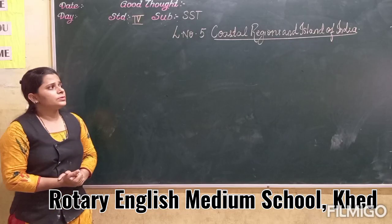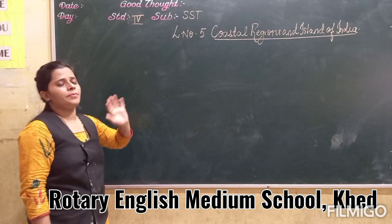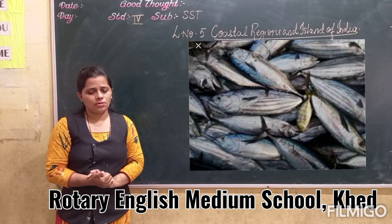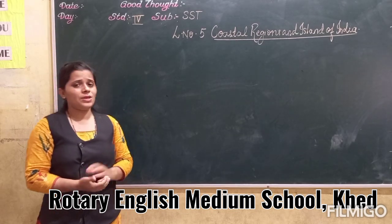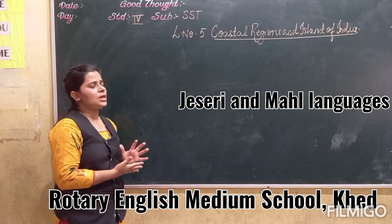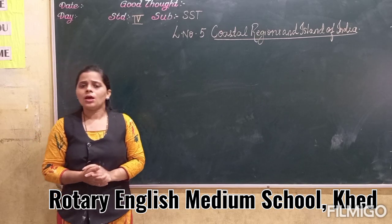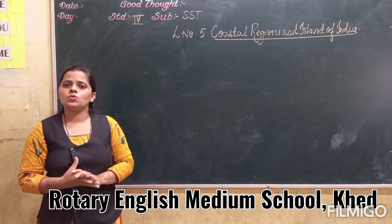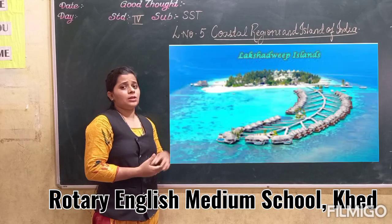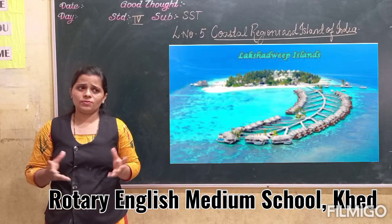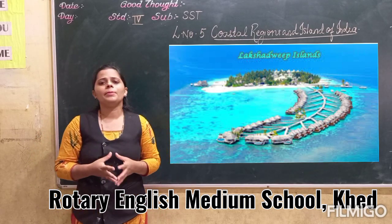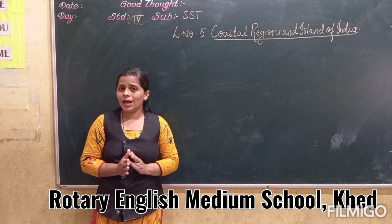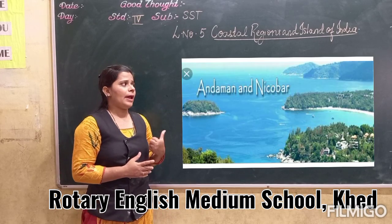Here coconut is the main crop grown in this region, and fishing is the main industry. The people speak Jesari and Malayalam language. Some of them also speak Marathi language. This island is also a tourist attraction — people from within the country and all over the world come to visit.